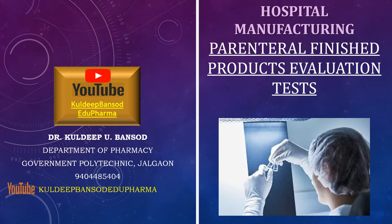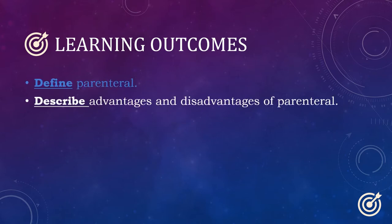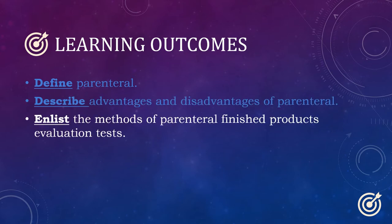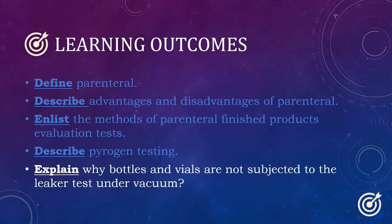Let's see first what are the learning objectives. After going through this learning dialogue, students will be able to define parenteral, describe advantages and disadvantages of parenteral, enlist the methods of finished product evaluation test, describe pyrogen testing as well as other tests used to test the presence of endotoxins, and explain why bottles and vials are not subjected to the liquor test under vacuum.